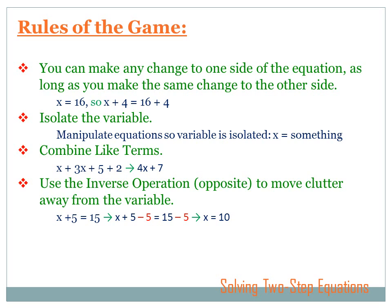And last, use the inverse operation, or the opposite, to move clutter away from the variable. In other words, to isolate that x and get rid of the other numbers that are changing the value of that x, you need to use an inverse operation to get rid of them. Here's an example. I've got x plus 5 equals 15. And that plus 5 is cluttering up the left side of the equation and keeping it from reading x equals something. So I've got to get rid of that plus 5. How do I get rid of a plus 5? I do the inverse operation, or I do the opposite of adding 5.